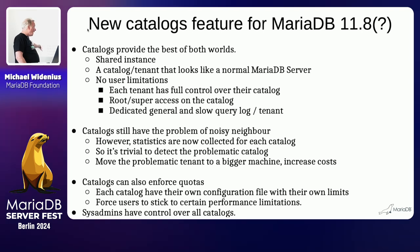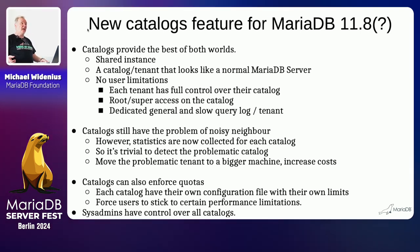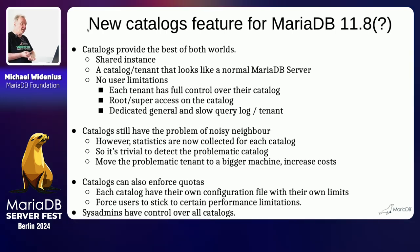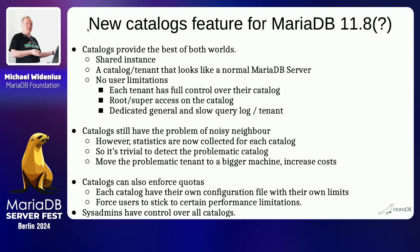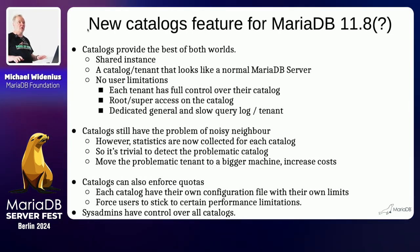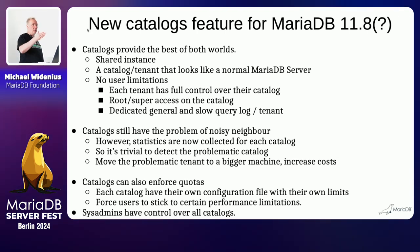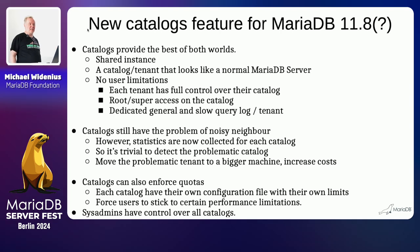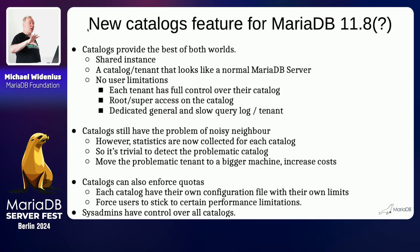We will allow catalogs to have quotas, especially for SaaS providers. Each catalog will have its own configuration file with limits, its own log file, its own general log and slow query log — which is much better for the tenant because they can actually see what queries and slow queries they are running. You also have a sysadmin who has control over all catalogs, but nobody can do cross-joins between catalogs. The sysadmin can move between catalogs and can do SHOW STATUS across all catalogs to see the total status, while going into detail to find a noisy neighbor.